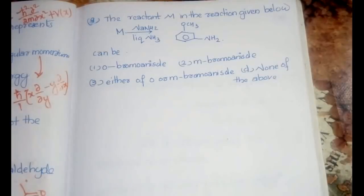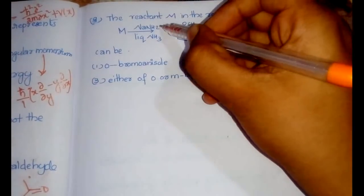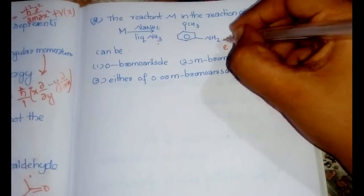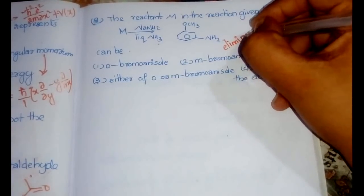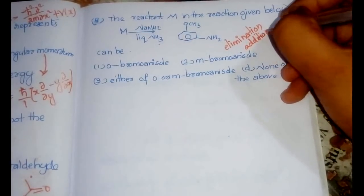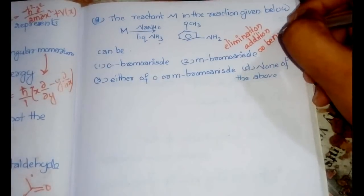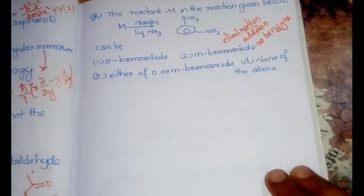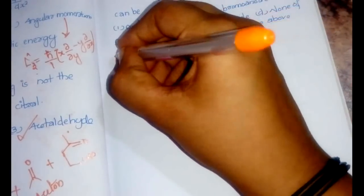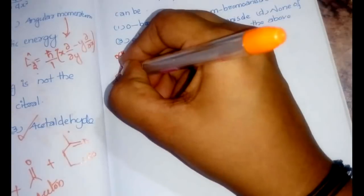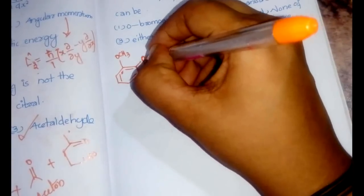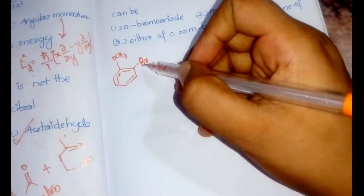The next question asks for reactant M in a given reaction. Since we see NaNH₂ and liquid NH₃, this is an elimination-addition reaction — the benzyne mechanism. Starting with o-bromoanisole (o-OCH₃ with bromine present).